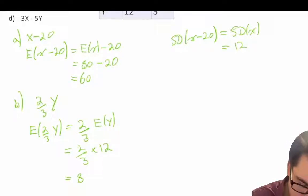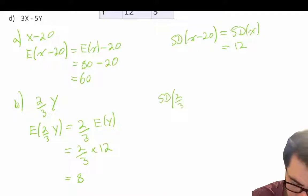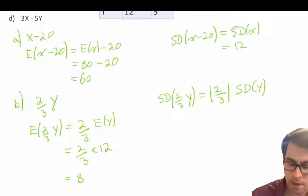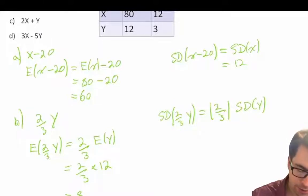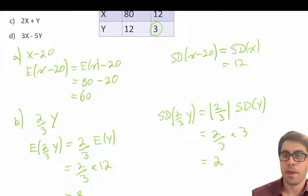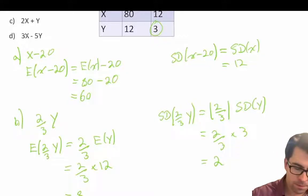Our standard deviation of 2/3 Y is equal to the absolute value of 2/3 times the standard deviation of Y. The standard deviation of Y is given to us — we're told it's 3. So 2/3 times 3 is equal to 2. So our standard deviation of 2/3 Y is equal to 2.